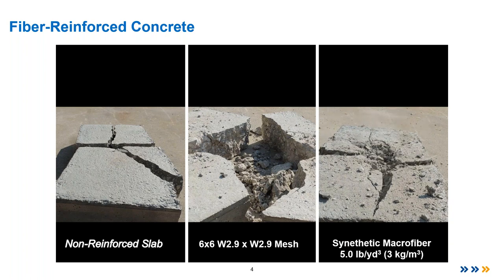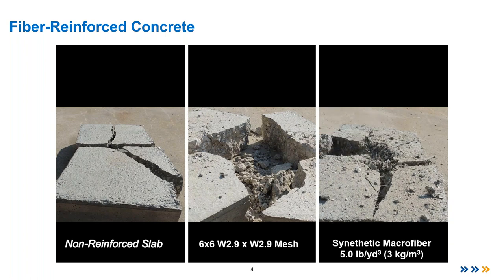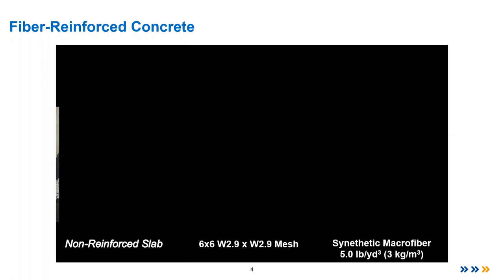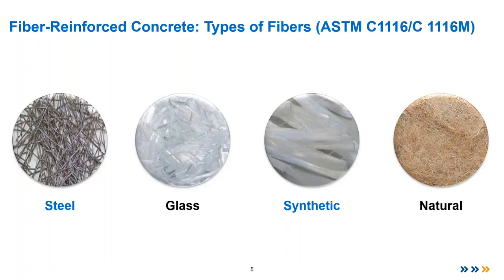I'll start with a video to give you an idea of what we get by adding fibers to concrete. The first video on the left shows an unreinforced slab — no bar, no mesh, no fibers. As soon as it's hit, it shatters into four pieces, while the ones with mesh and fibers can take more hits before shattering. The reinforcement does not stop cracking — it keeps the concrete in one piece and controls how wide the crack is.